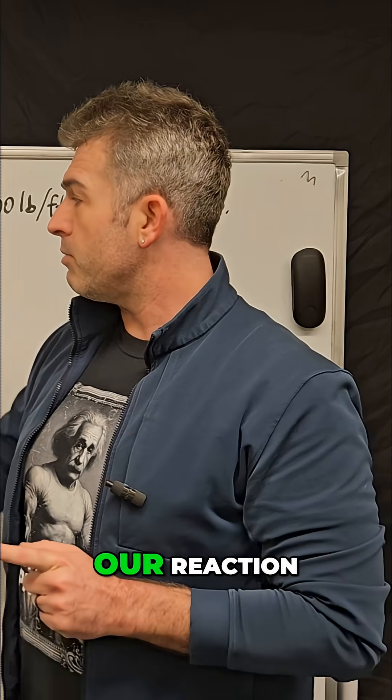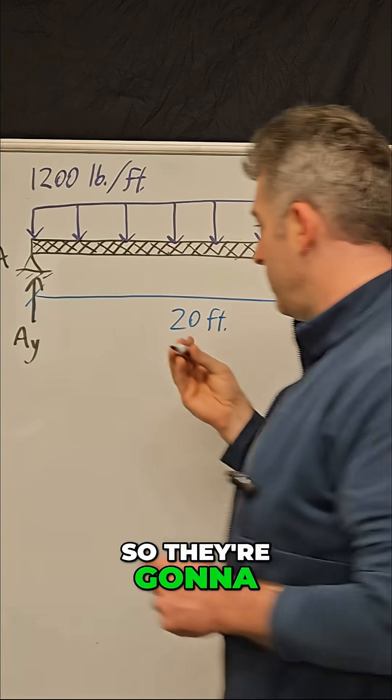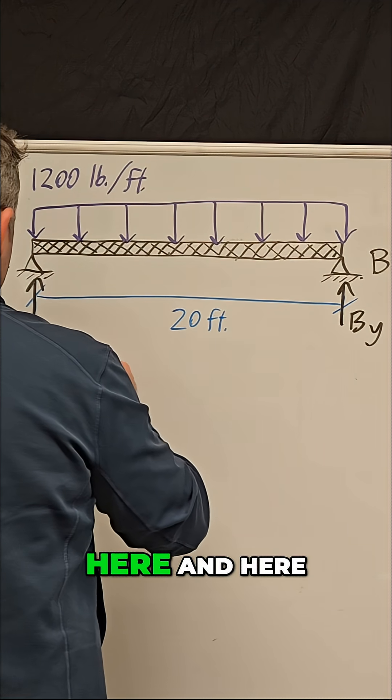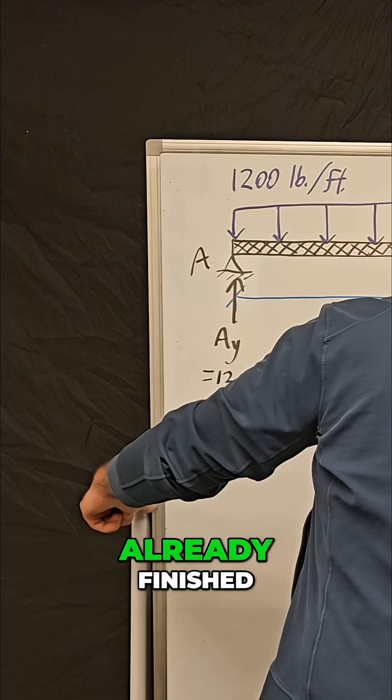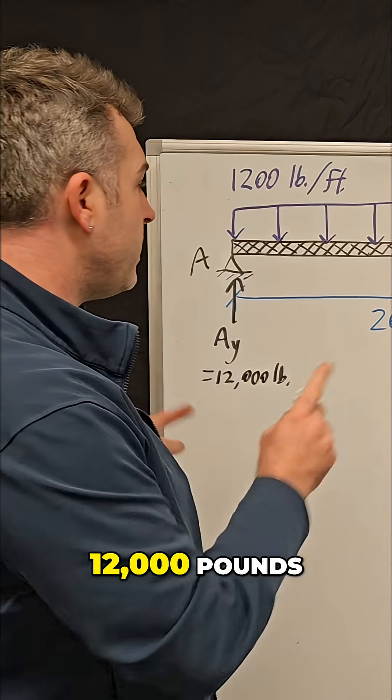And that means our reaction forces at A_Y and B_Y are each one half of that. So they're going to be 12,000 pounds here and here. So we've already finished our first step. A_Y and B_Y, the two reaction forces are 12,000 pounds each.